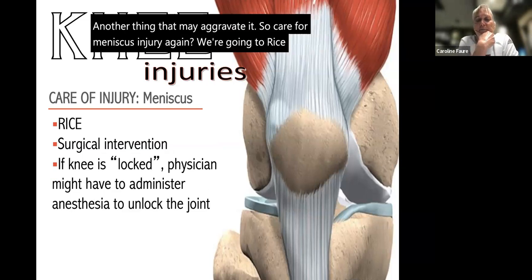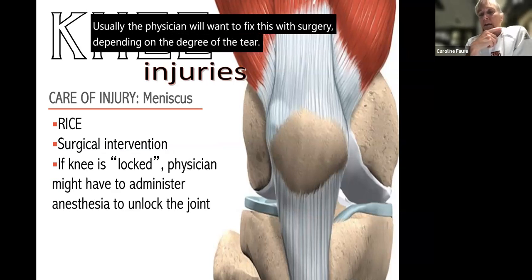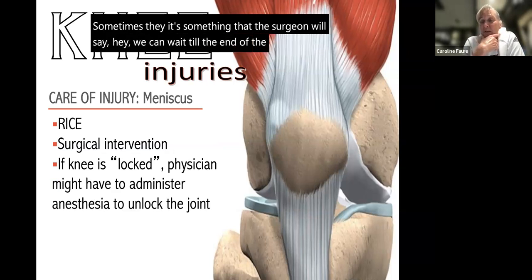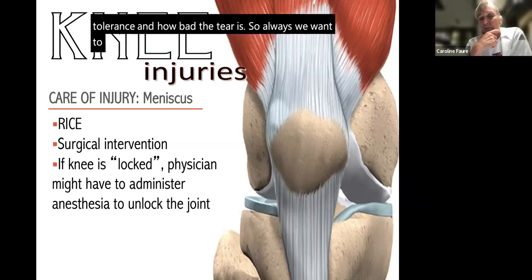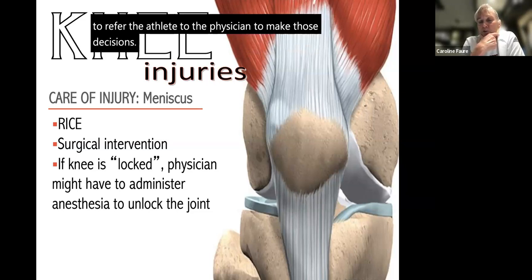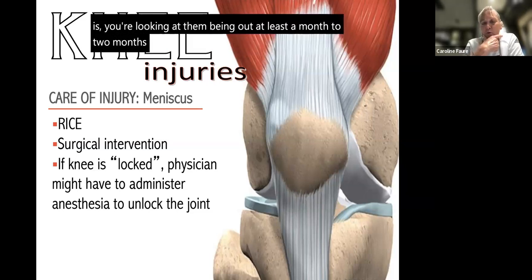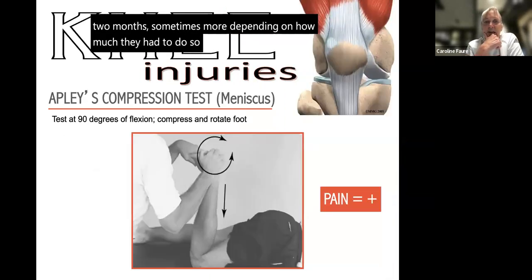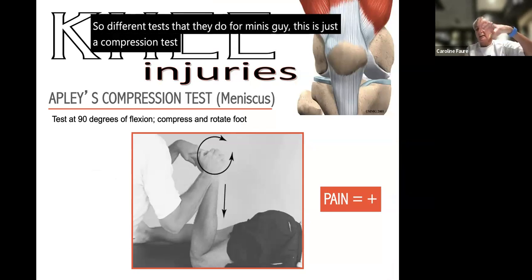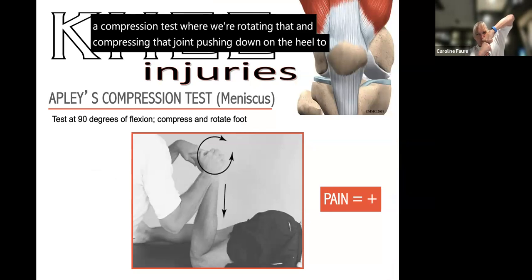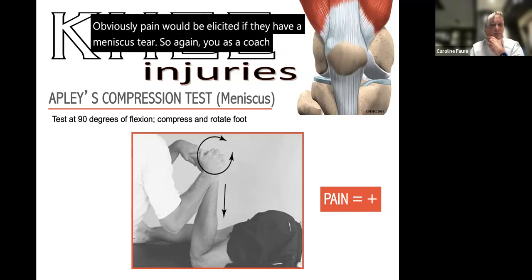Care for meniscus injury: always RICE. The physician will usually want to fix it with surgery depending on the degree of tear. Sometimes the surgeon will say they can wait until the end of the season; sometimes they want to fix it right away — it depends on the kid's pain tolerance and how bad the tear is. Always refer the athlete to the physician to make those decisions. After surgery, expect at least one to two months away, sometimes more. Special tests such as compression tests and McMurray's test — rotating and compressing the joint, adding flexion, extension, and internal/external rotation feeling for clunks at the joint line — are used to diagnose meniscal tears.